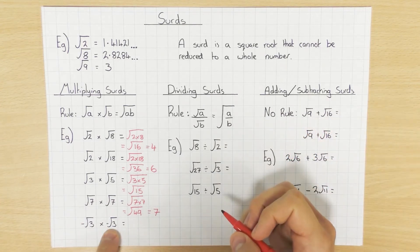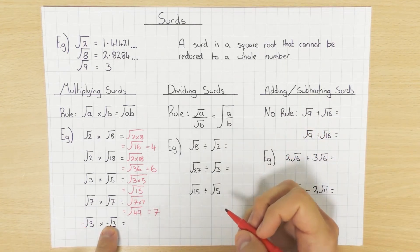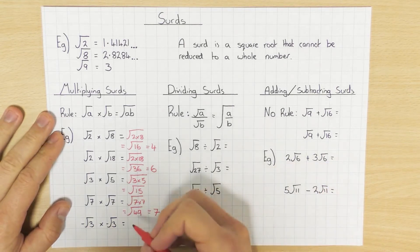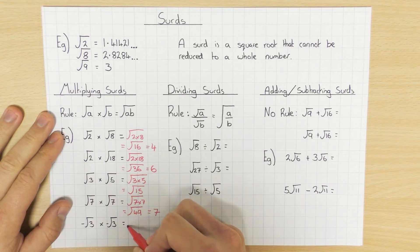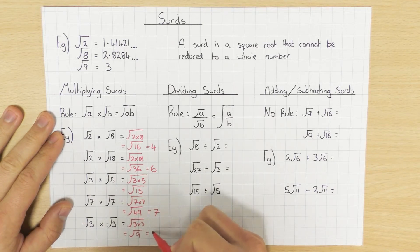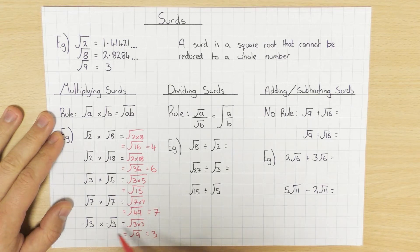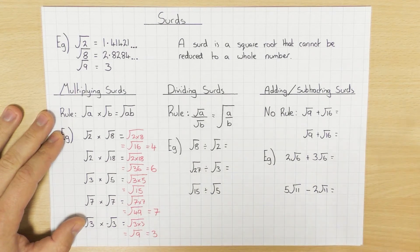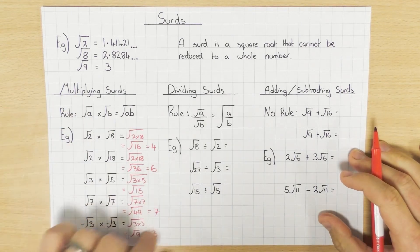Similar thing even if they're negative — a negative times a negative gives a positive result. So negative root 3 times negative root 3 is the same as saying 3 times 3, which is root 9, and that gives back 3. So we just get rid of the square root and get a positive answer. Of course if just one of those was negative, the answer would be a minus. And that's multiplying — quite simple.